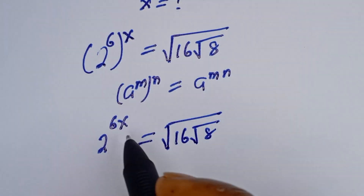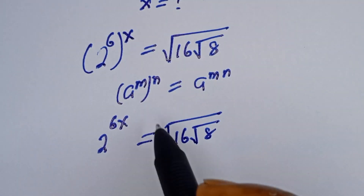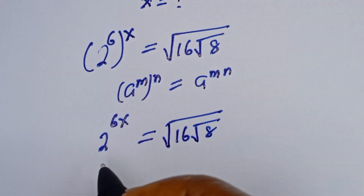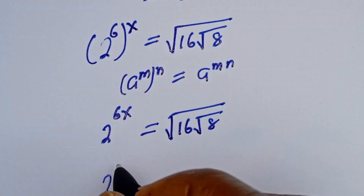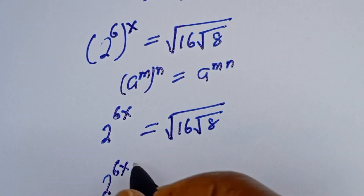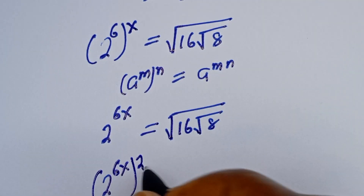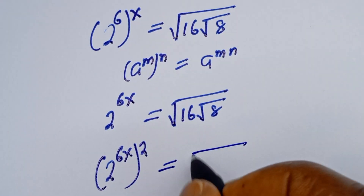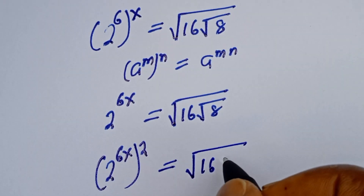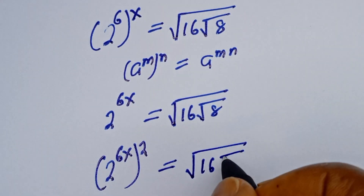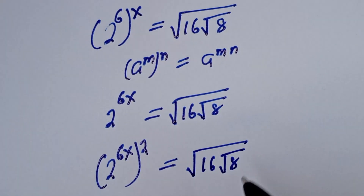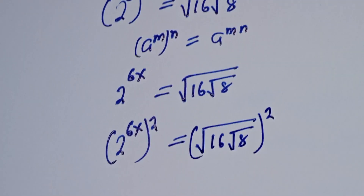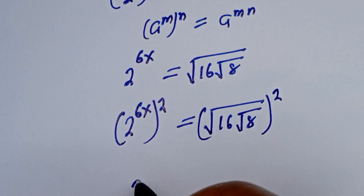Now let's take the power of both sides by 2 — that is, 2 to the power of 6s, to the power of 2, is equal to square root of 16 times square root of 8, to the power of 2.